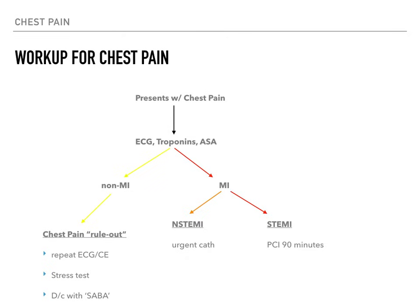If it's a STEMI, the saying is 'door to balloon within 90 minutes' — get them to the cath lab within 90 minutes. It's the answer on boards, on Step 1, on Step 2, and when you get pimped on rotations. If it's an NSTEMI, they still need to go to the cath lab, but it's urgent and not emergent. It doesn't have to be done within 90 minutes — but it still needs to be done.